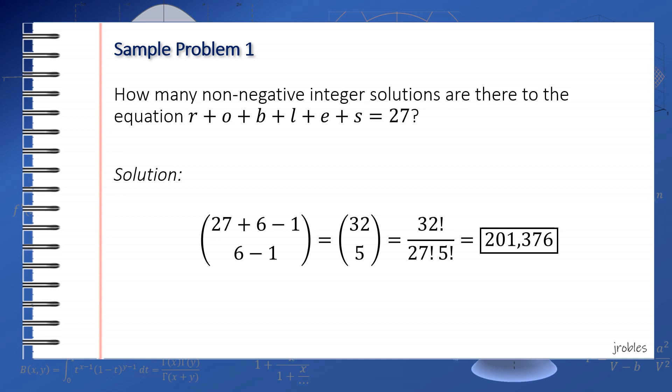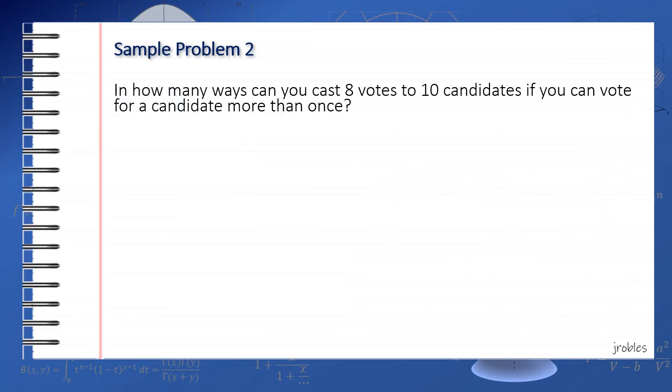Anyway, moving on to the next problem. In how many ways can you cast 8 votes to 10 candidates if you can vote for a candidate more than once? Although not stated, it's fair to assume that we are allowed not to vote for a candidate since we cannot vote for all of them at once anyway. Therefore, the stars and bars technique can be applied straightforwardly.